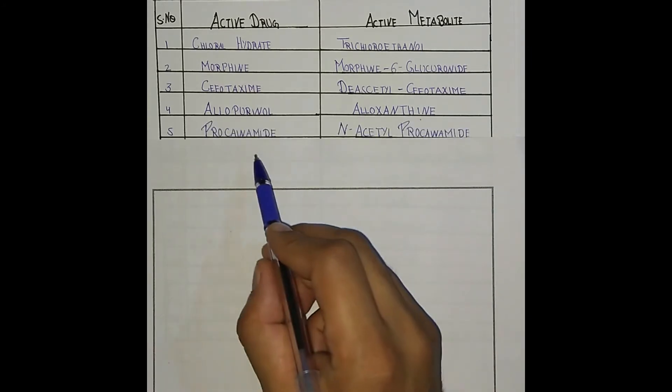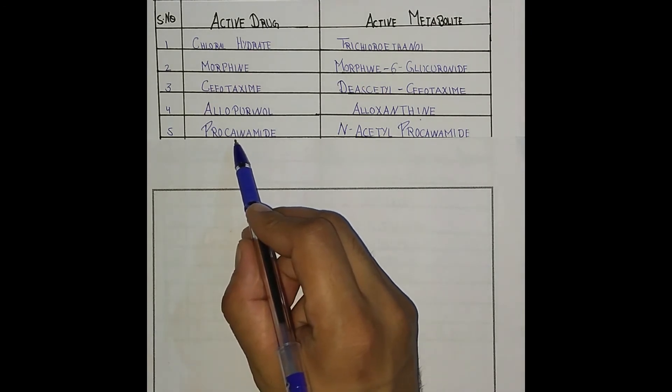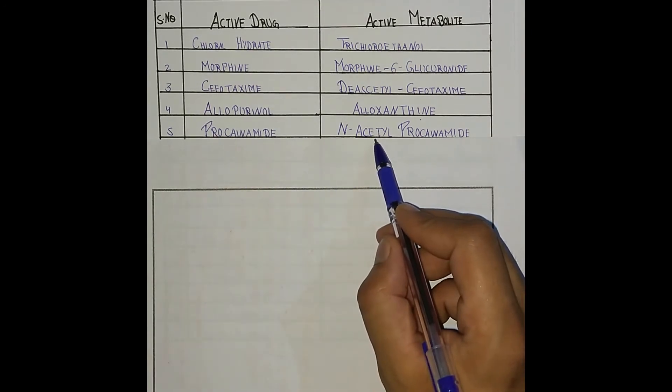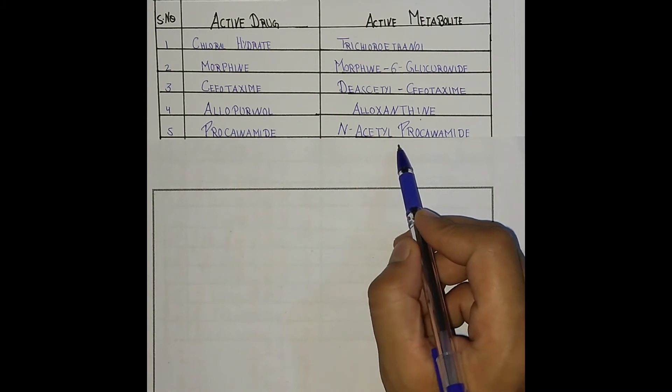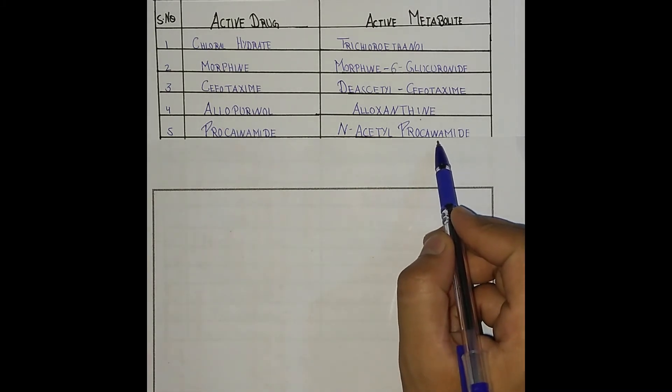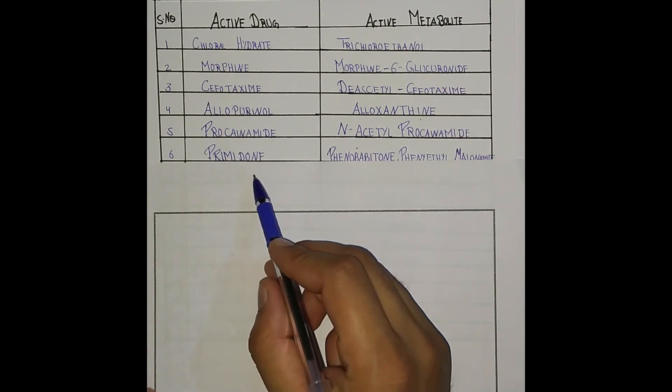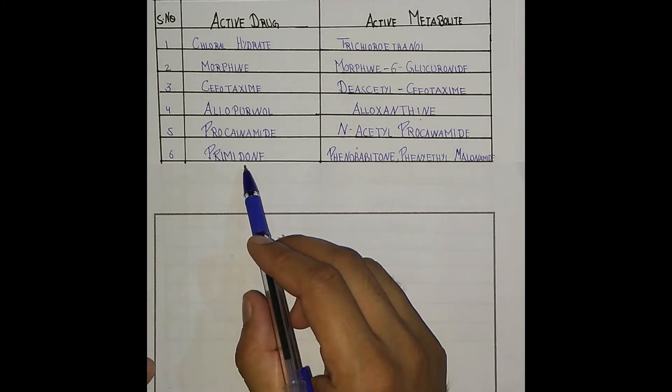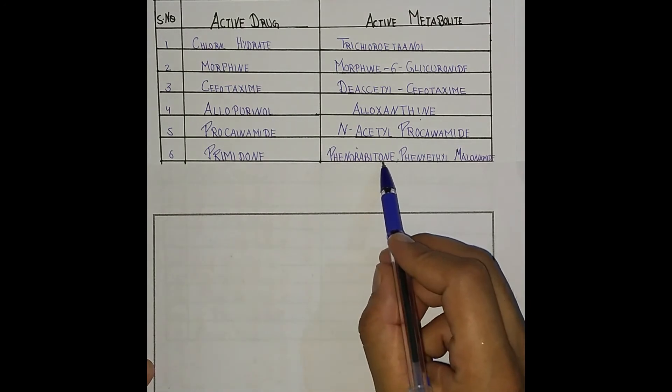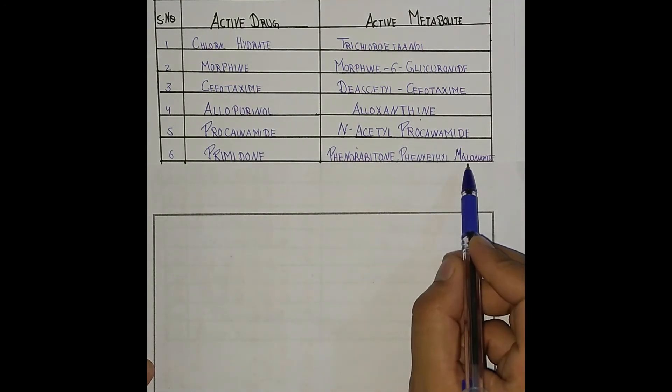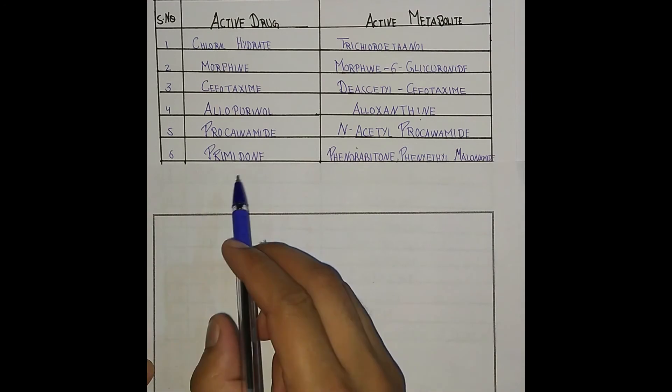Now next one is procainamide. Procainamide has an active metabolite which is N-acetyl procainamide. Next one is primidone. Primidone has two or three active metabolites: phenobarbitone and phenylethylmalonamide.